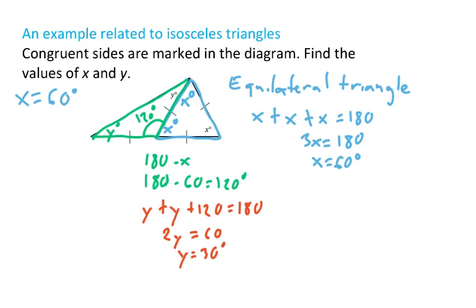So now we know that X is 60 degrees and Y is 30 degrees. And that's just a very nice little example of playing with isosceles triangles.